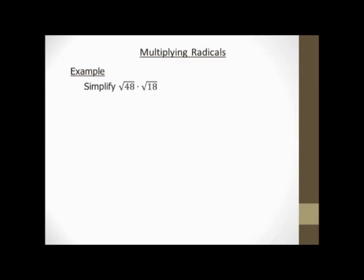Hi there, it's me, Mr. B. We're going to simplify square root of 48 times square root of 18. Alright, in order to figure out whether I can actually multiply these radicals, I have to look at the index. The index on both of these is a 2 since it's not written there, so it looks like I can go ahead and multiply. The first thing I want to do is break each of these radicands down into their prime factors. So 48 is 2 times 2 times 2 times 2 times 3. And 18 is 2 times 3 times 3. My coefficients here are 1, so my coefficient is going to remain 1 — I don't need to write it there, and I don't need to write the 2 for the index.